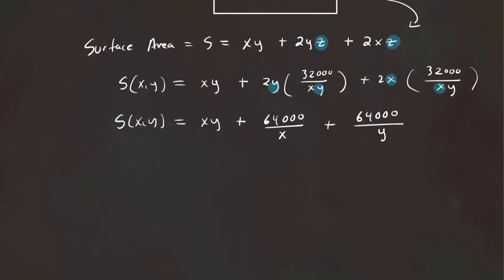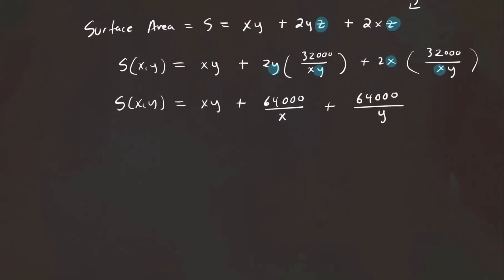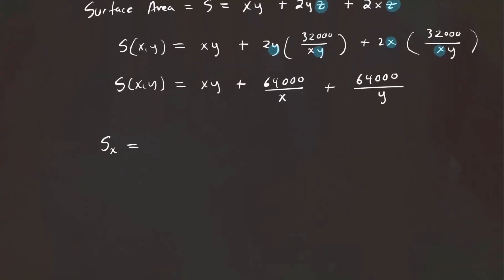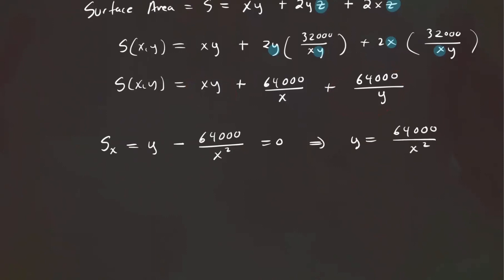Now let's take the partial derivatives and set them equal to zero to find the critical points. The partial derivative of S with respect to X gives: Y minus 64,000 over X squared equals zero. Setting this equal to zero and isolating gives Y = 64,000 over X squared. Let's hold on to that.